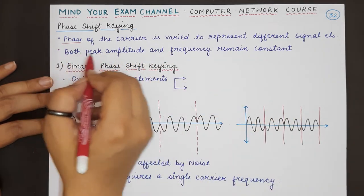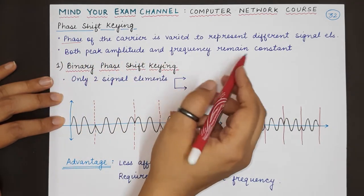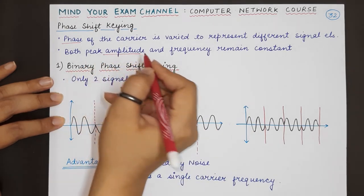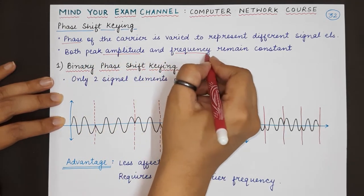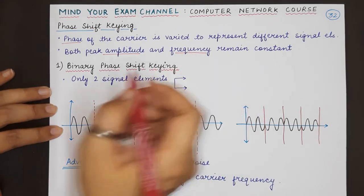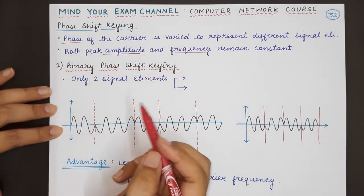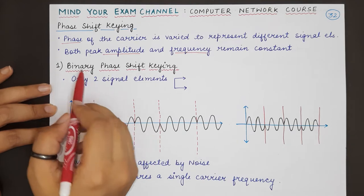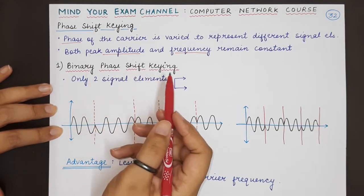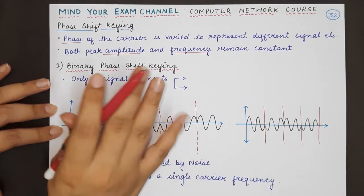Both the peak amplitude and the frequency will remain constant. Only variation will be in terms of the phase. In phase shift keying, the first type is basically binary phase shift keying and this is the one that we have to study.